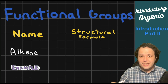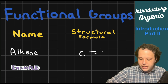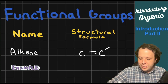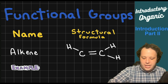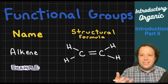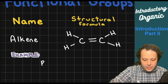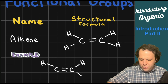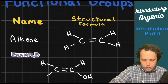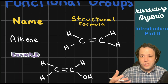The first functional group is alkenes, which we went over in part one. This is anything involving a double-bonded carbon structure — a C=C double bond. Whether it's connected to hydrogens or to another chain, that double-bonded structure is the key thing we're looking for in any alkene example.